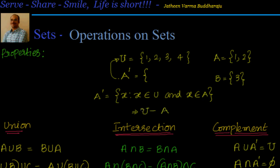So we can write complement of A as nothing but U minus A. Complement is equal to the difference between the universal set and that set. Now if I look here, A complement: in U I have {1, 2, 3, 4}, and elements of A are 1 and 2, so those are removed. A complement is nothing but {3, 4}.